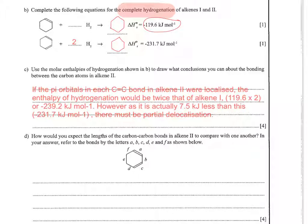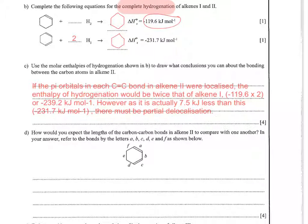Obviously it's not twice that, it's slightly less. So it must be slightly more stable. It would have been minus 239.2, because that's minus 119.6 times 2. If they were completely localised, it would be minus 239.2 kJ per mole. It's actually 7.5 kJ less than this, so there must be some partial delocalisation causing extra stability in the same way that delocalisation in benzene causes its enthalpy of hydrogenation to be less than expected.